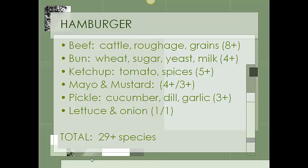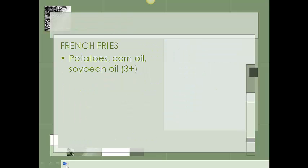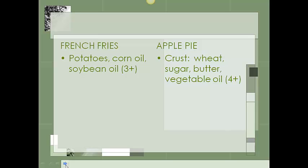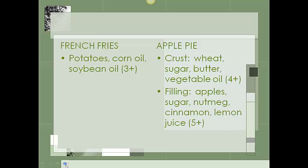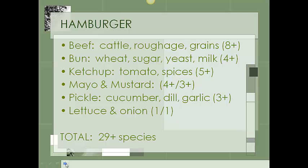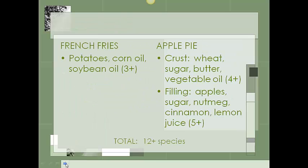That's a huge number of species for one meal — and remember, we're also doing french fries and apple pie. French fries need potatoes and oil to fry them in. The apple pie has a crust with wheat, sugar, butter, and vegetable oil, plus fillings of apples, sugar, nutmeg, cinnamon, and lemon juice — all from plants. That's a total of 12 more species at minimum. Adding the 29 species from the hamburger to the 12 from the french fries and apple pie, we're looking at 40 to 50 species altogether to provide this entire meal — and that's just one meal of one day. Imagine how much we depend on the biodiversity of plants and animals on this planet just to feed us.